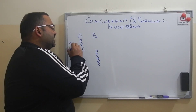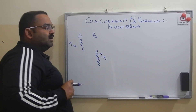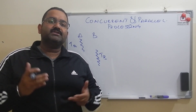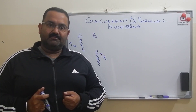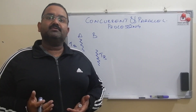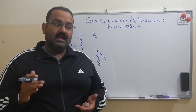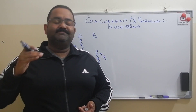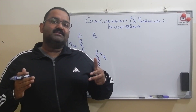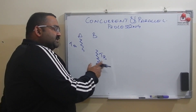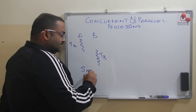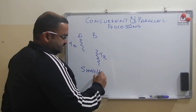I can call them thread A and thread B. Now, in concurrent processing both of these threads can run almost at the same time — they both can be executed at the same time. The main thing is these threads run almost at the same time, but they run on a SINGLE processor.